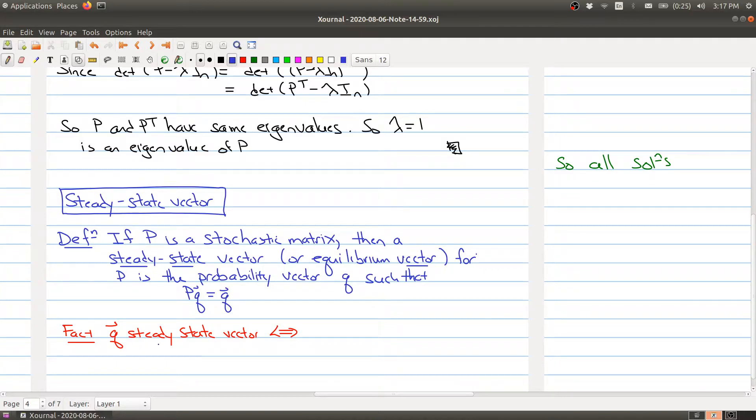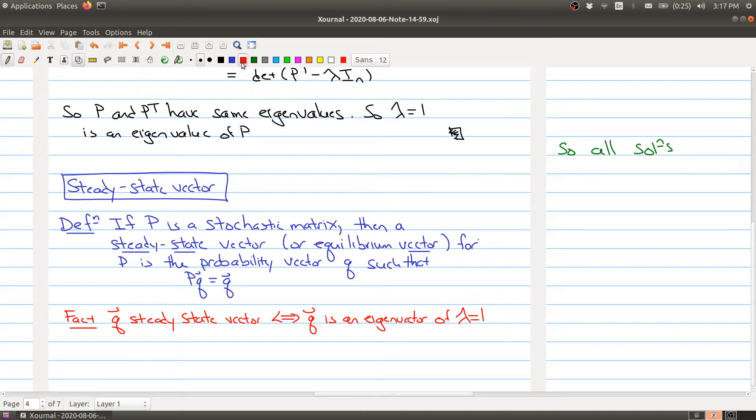And so Q is a steady state vector. When we look at this equation, that means that Q is an eigenvector of lambda equals one. And we know lambda equals one is an eigenvector of our stochastic matrix. That's what we just proved. That is also a probability vector.